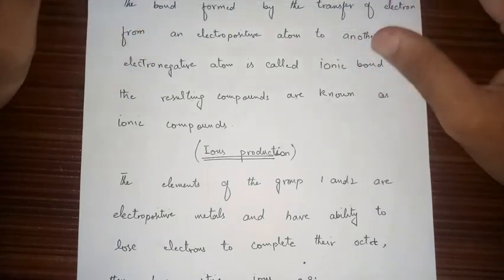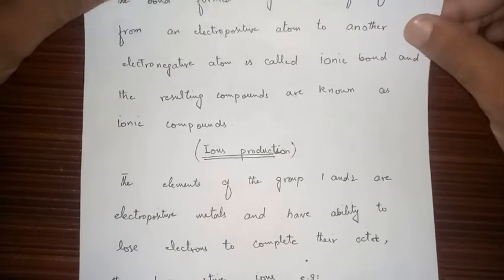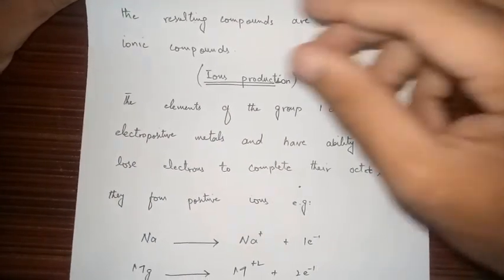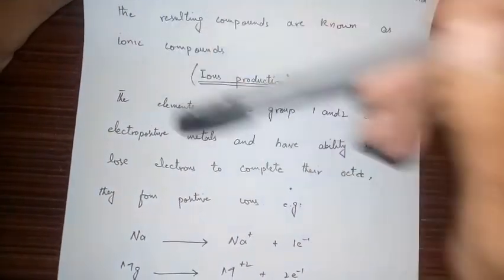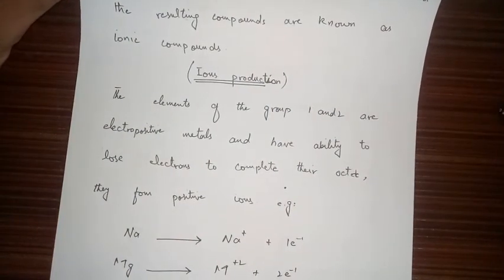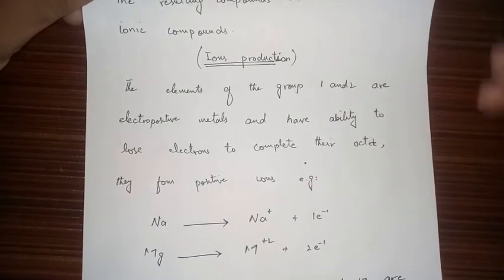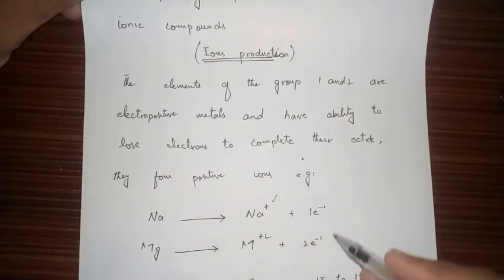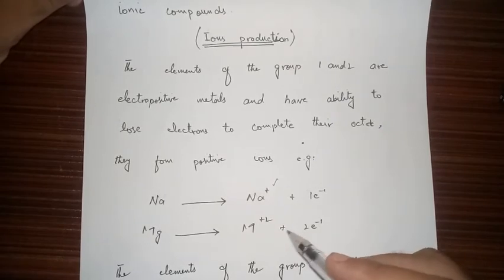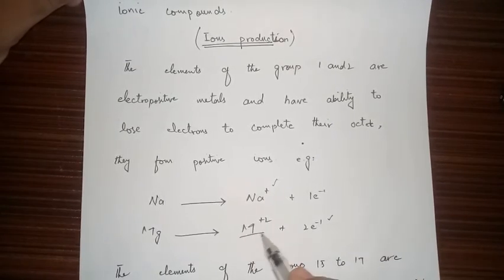They lose electrons to gain stability, complete their octet, and gain the nearest noble gas electronic configuration, forming positive ions. For example, sodium has one electron in its valence shell and tends to lose it to form the sodium ion. Magnesium has two electrons in its valence shell and loses both to form magnesium ions.